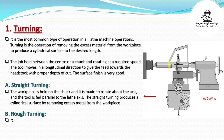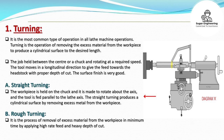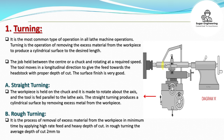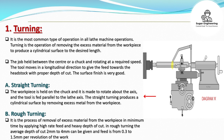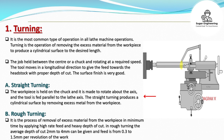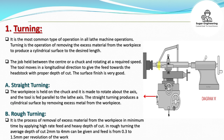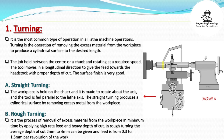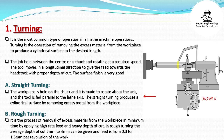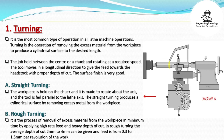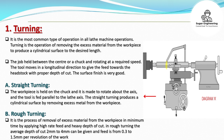In straight turning, the workpiece is held on the chuck, rotated about the axis, and the tool is fed parallel to the lathe axis, producing a cylindrical surface by removing excess metal. In rough turning, excess material is removed in minimum time by applying a high feed rate and heavy depth of cut — typically 2 mm to 4 mm depth of cut and feed of 0.3 to 1.5 mm per revolution.